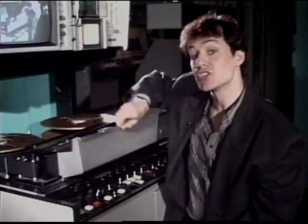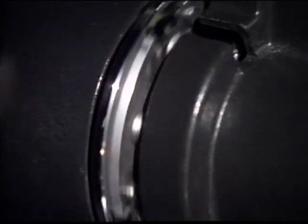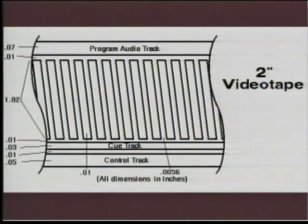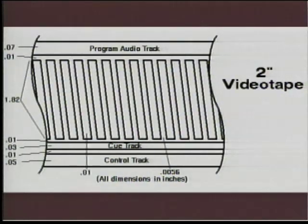Here's a little nitty-gritty on what the guys at Ampex designed into their machine. In one second, the head drum rotates 240 times, placing 960 short tracks on the videotape. The tape is 2 inches wide, but room is left for audio, control track, and blank separating guard bands. Therefore, each video track is about 1 and 4/5 inches long. To allow uninterrupted output from the switched heads, only 1 and 5/8 inches is used for fresh video.